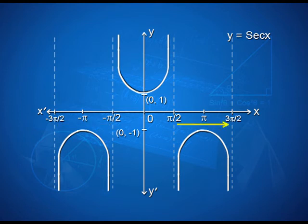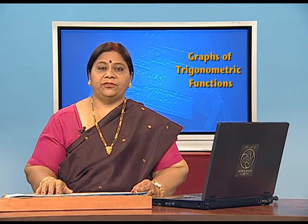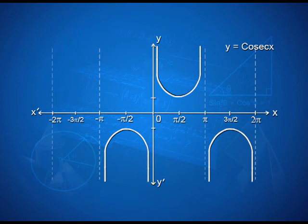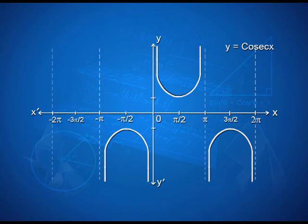Between pi/2 and 3pi/2 it can be seen in a similar manner — it is just the mirror image of the previous graph. Now we will draw the graph of y = cosec x. You can see the graph on your screen, with x'Ox as the x-axis and yOy' as the y-axis. We draw the curve between 0 and pi, then between the origin and −pi, and between pi and 2 pi as the mirror image of the graph between the origin and −pi.